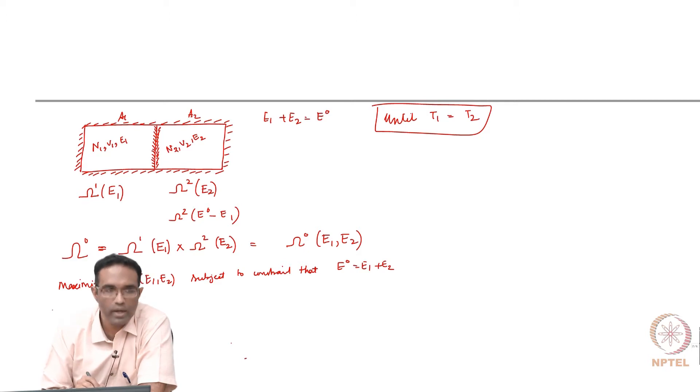How will you extremize functions which have constraints? You have heard of Lagrange multiplier method, so we will use exactly the same thing. We will form a composite function omega naught bar, which is omega 1 E1 times omega 2 E2 plus lambda times E naught minus E1 minus E2.